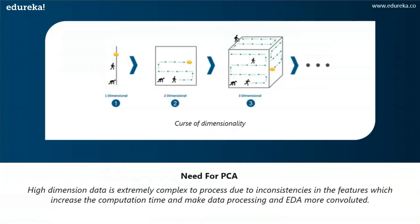Machine learning in general works wonders when you provide a data set which is large and which is more informative. Usually it's said that having a good amount of data lets you build a better predictive model because you have more data to train the machine with. However, using a large data set has its own pitfalls. The biggest pitfall is the curse of dimensionality. In order to understand what exactly curse of dimensionality means, let's take a look at a small example.